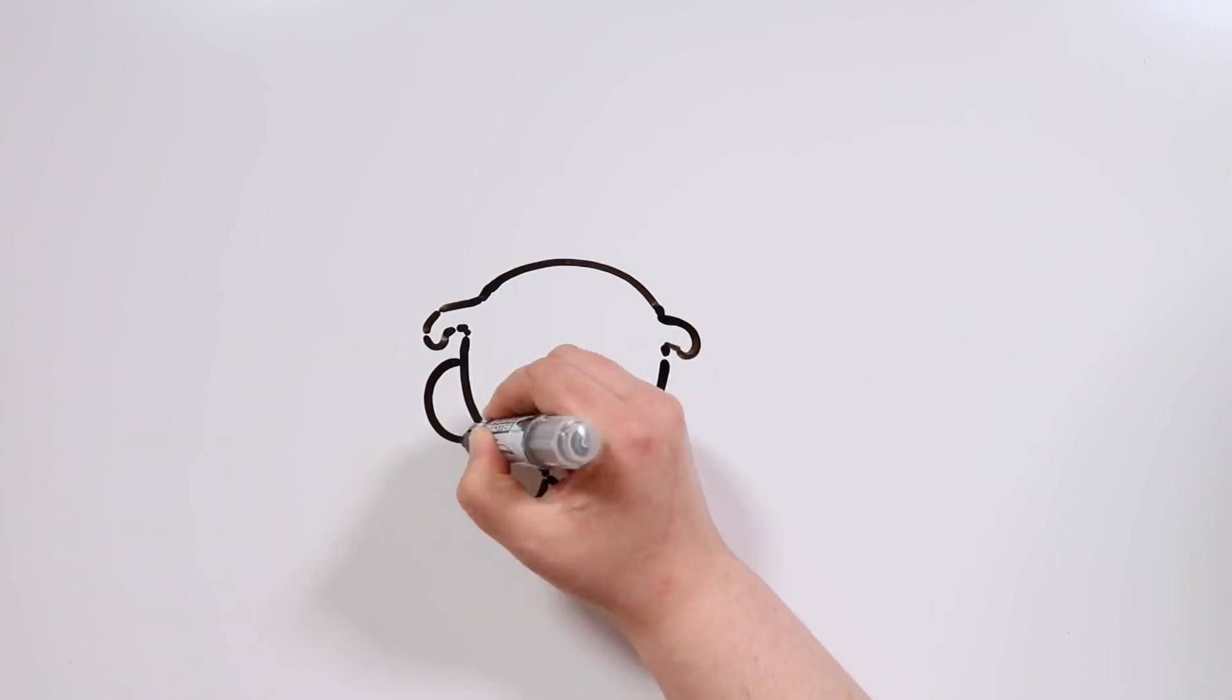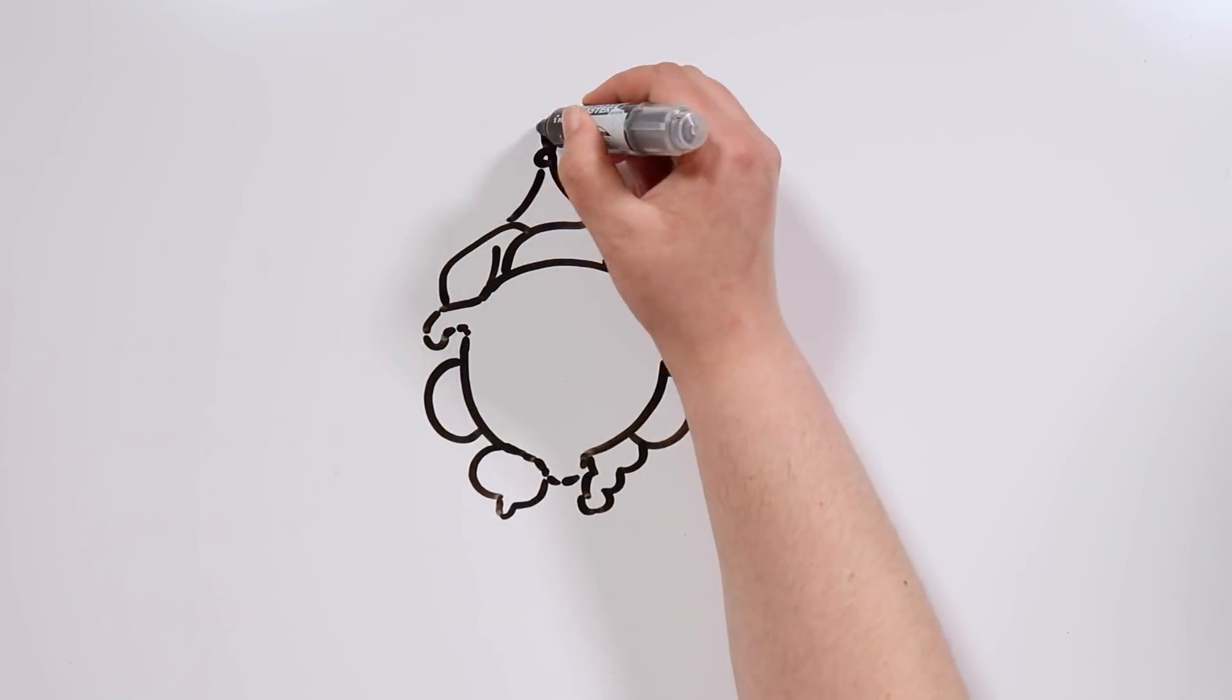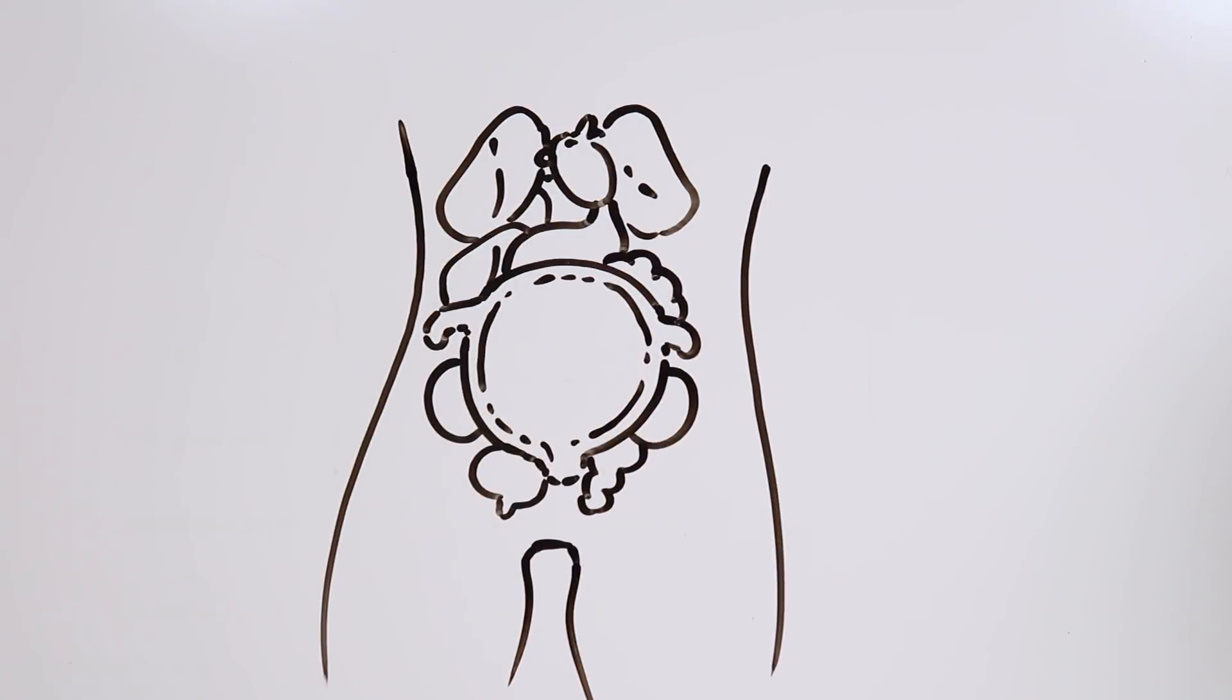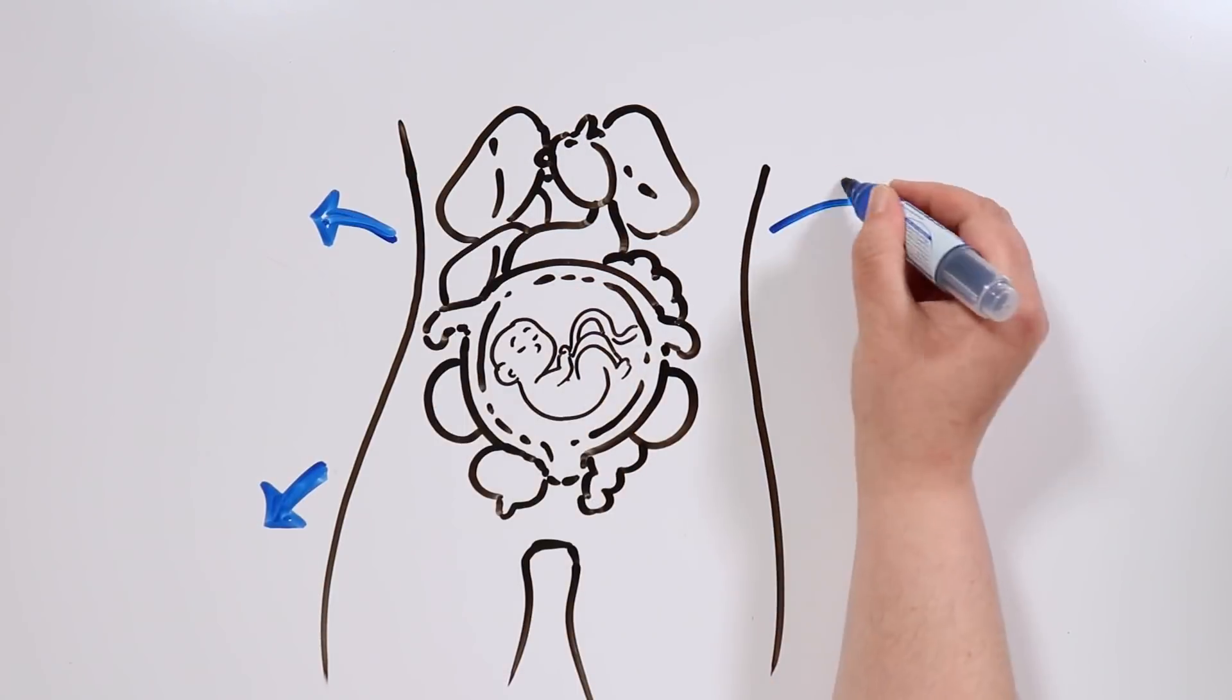The uterus keeps exerting pressure outside of it, and since it needs more and more space, it gradually pushes the organs around it. Sounds incredible, right?